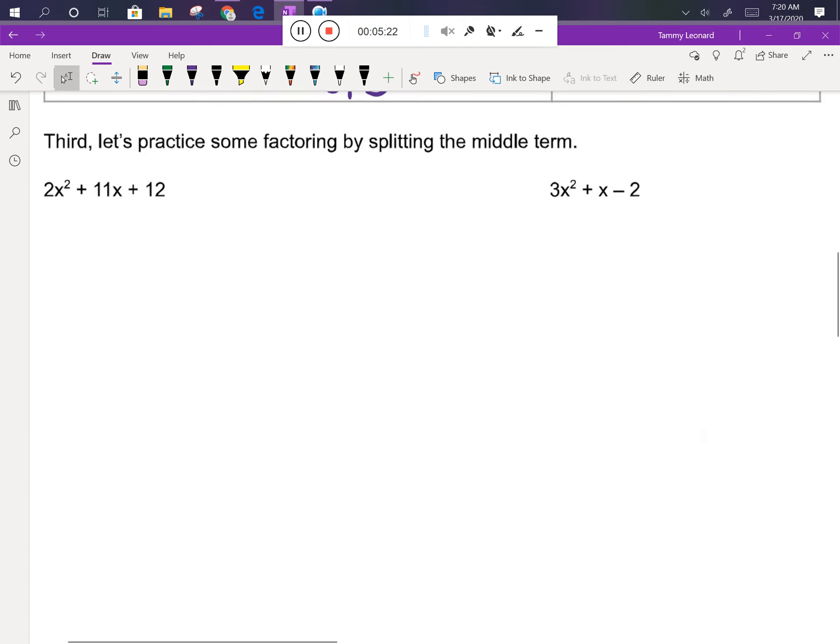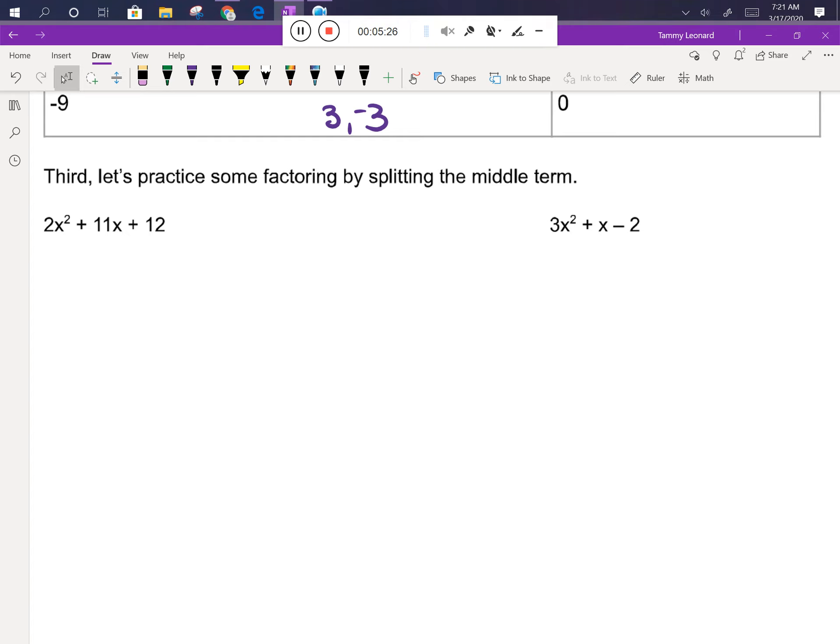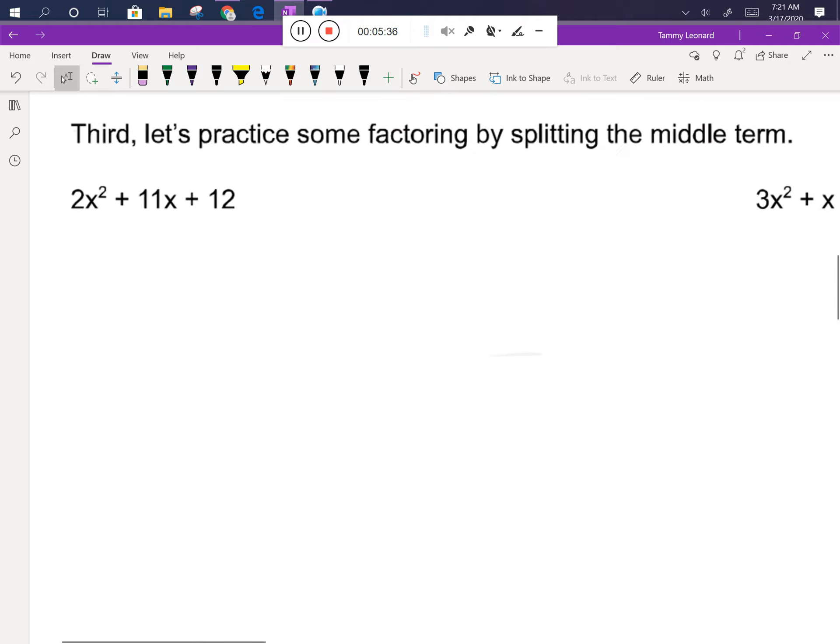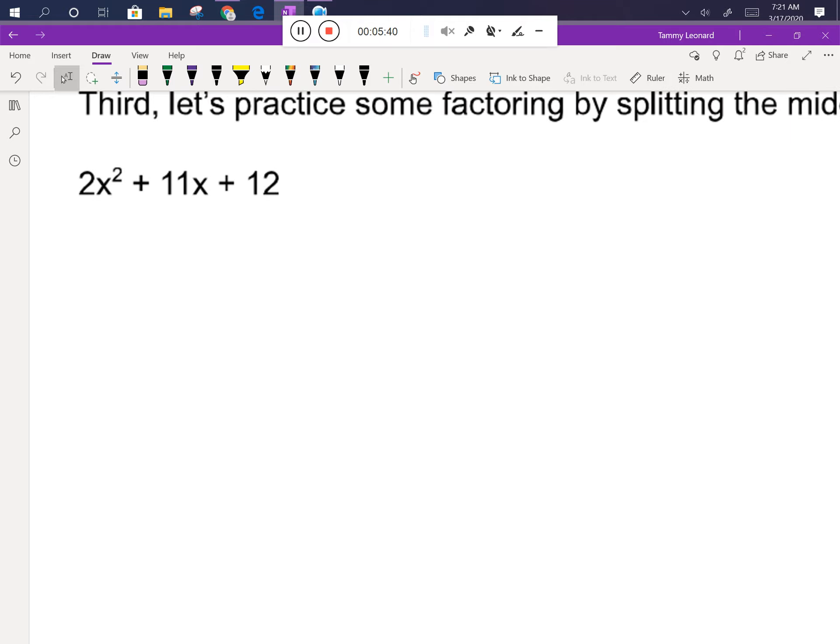All right, our last thing for today is to practice factoring by splitting the middle term. I'm going to do one problem with you, and then you're going to try one problem on your own. So let's start with the very first problem. It says 2x² + 11x + 12. All right, remember we have to create the puzzle to solve. Right, that puzzle practice that we just did is the first thinking that we need to do in this problem. We're going to take the 2 and multiply it by the 12 to get 24.